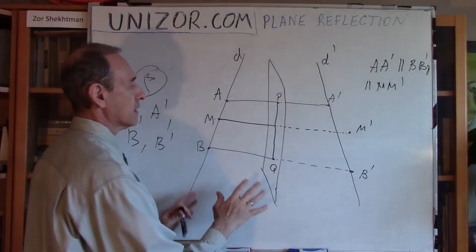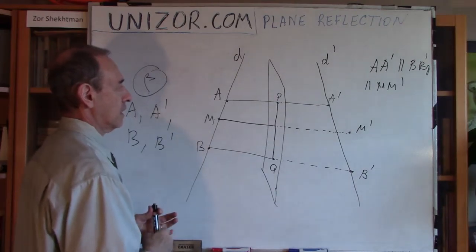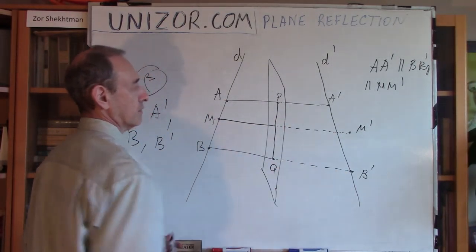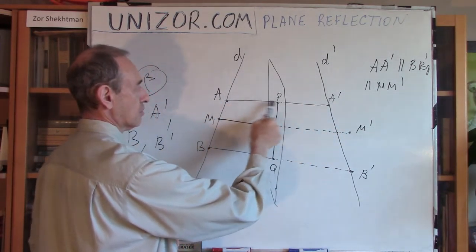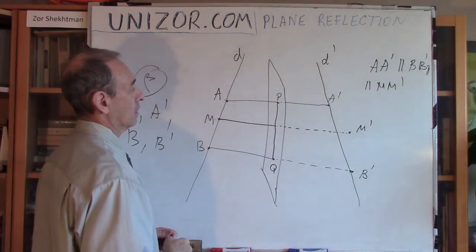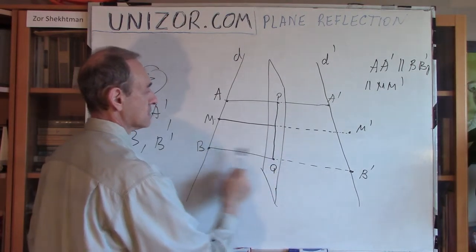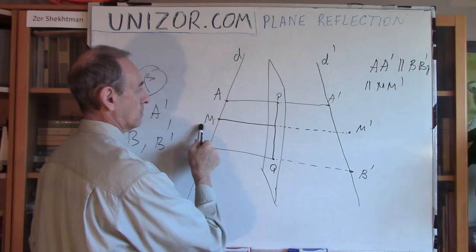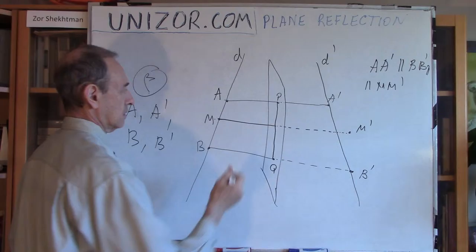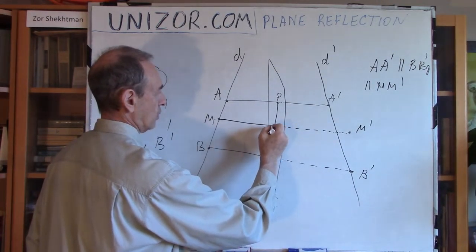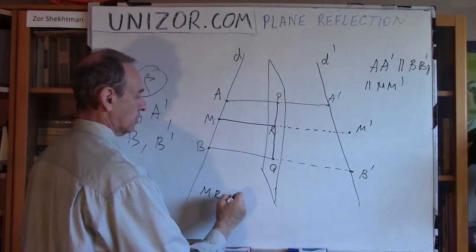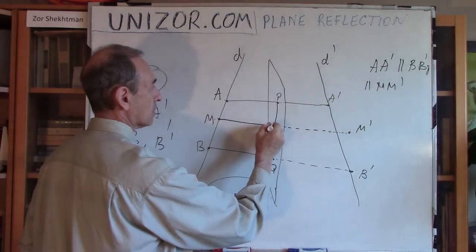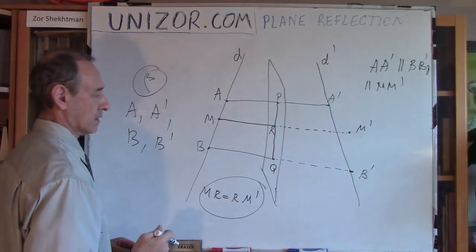What do I have? I have A, A prime, B prime, B — which form a trapezoid within plane beta — and these sides are parallel to each other. I also know that AP equals PA prime, so P is the midpoint of the top base of this trapezoid; similarly, Q is the midpoint of the other base. From point M I draw a line parallel to AA prime, and let's call the foot R. By definition of symmetry — I drop a perpendicular to the reflection plane and extend it by the same length — I know that MR equals RM prime.